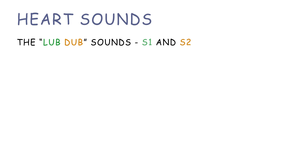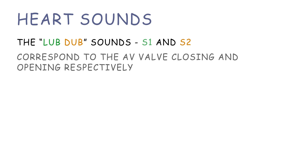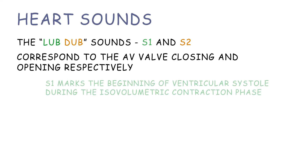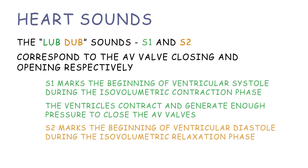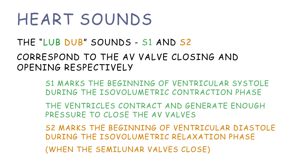The lub-dub sounds of the heart, called S1 and S2, correspond to the AV valve closing and opening, respectively. S1 marks the beginning of ventricular systole during the isovolumetric contraction phase. The ventricles contract and generate enough pressure to close the AV valves. S2 marks the beginning of ventricular diastole during the isovolumetric relaxation phase when the semilunar valves close.